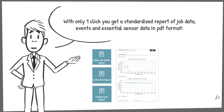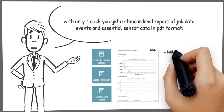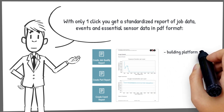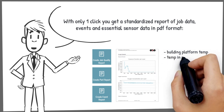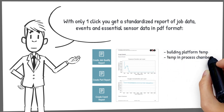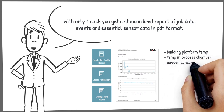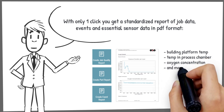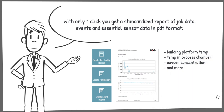You get a standardized report of job data, events, and essential sensor data — such as building platform temperature, the temperature in the process chamber, the oxygen concentration, and more — in PDF format.